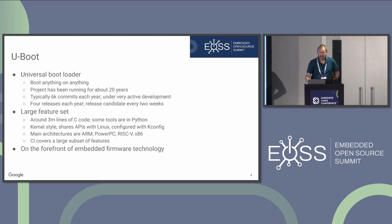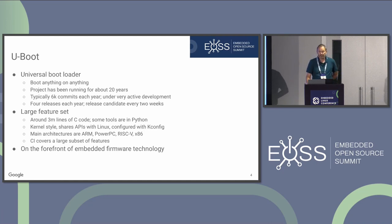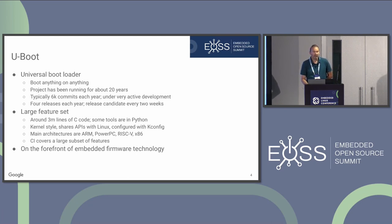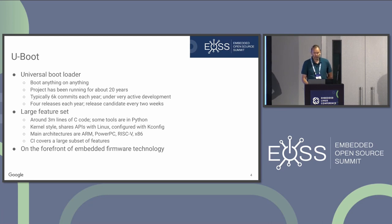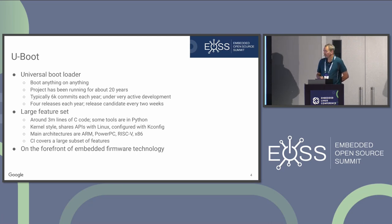U-Boot is a universal bootloader — boot anything on anything is the idea. It's been going for about 20 years, there are about 6,000 commits a year, quite a lot of active development across different architectures, and four releases each year. It's got a lot of code, mostly in C, some Python tools, and a lot of similarity to Linux. It uses the same code style, kconfig, and has compatibility layers so you can port drivers and subsystems from Linux without too much pain. It has CI covering a large subset of features and is on the forefront of embedded and firmware technology.